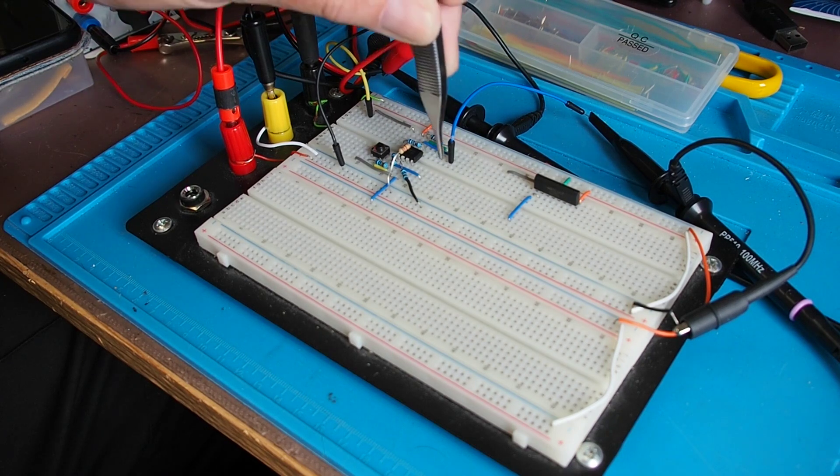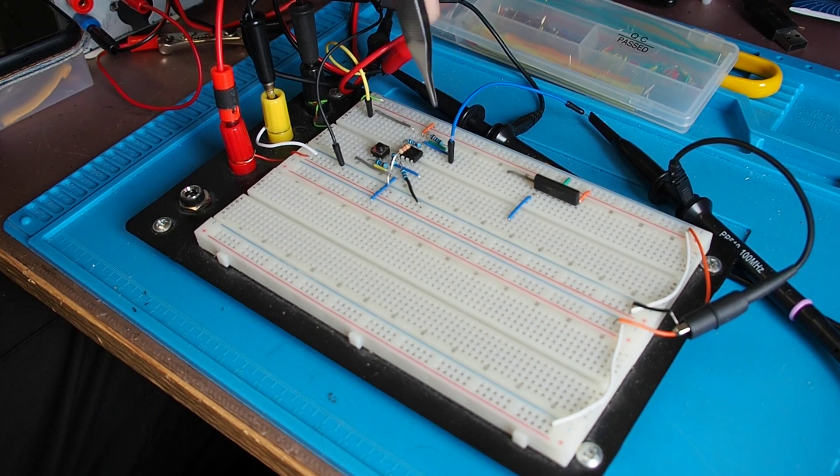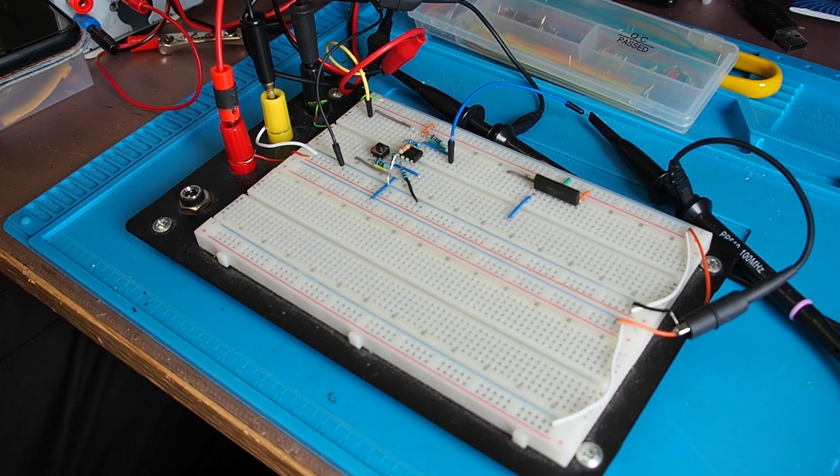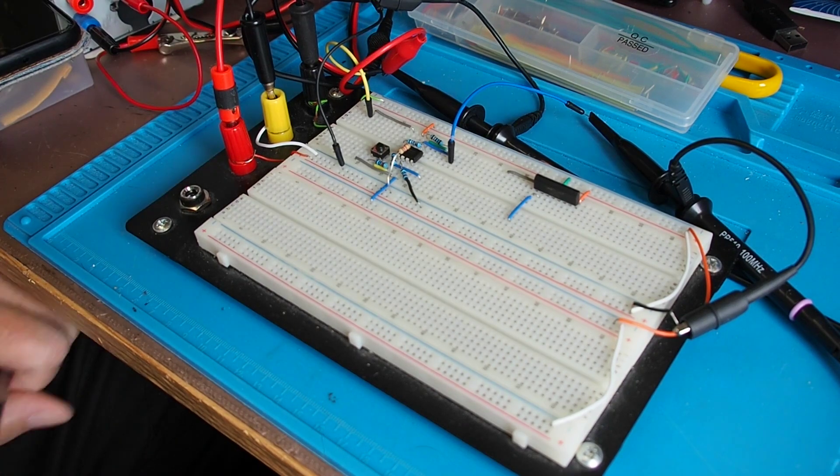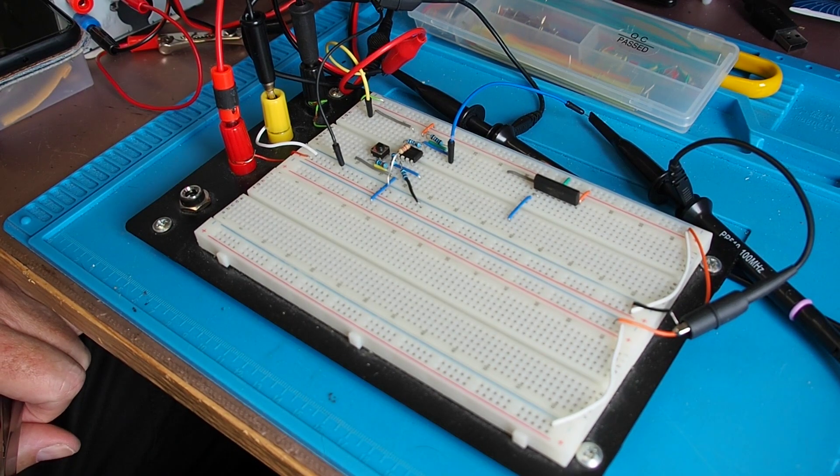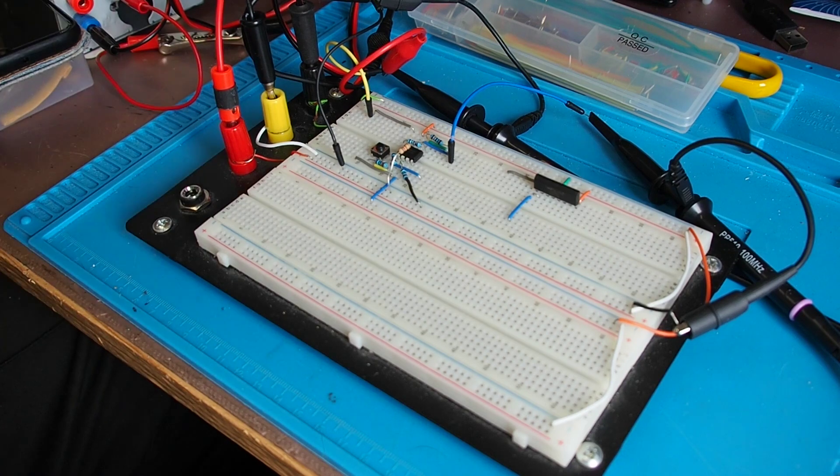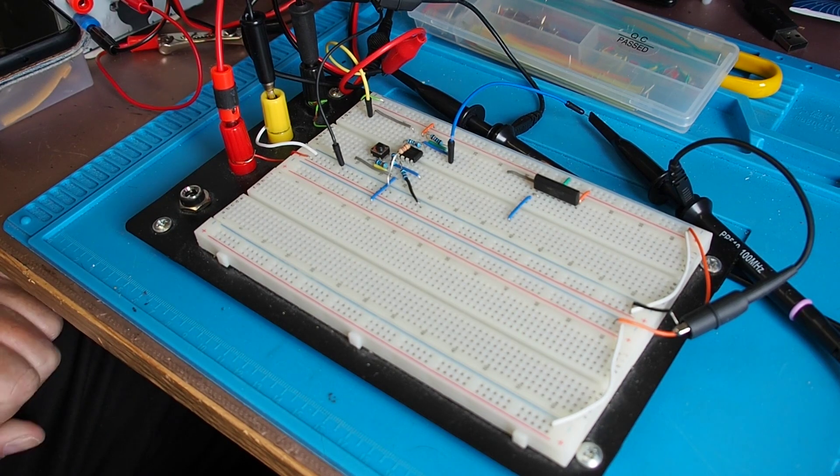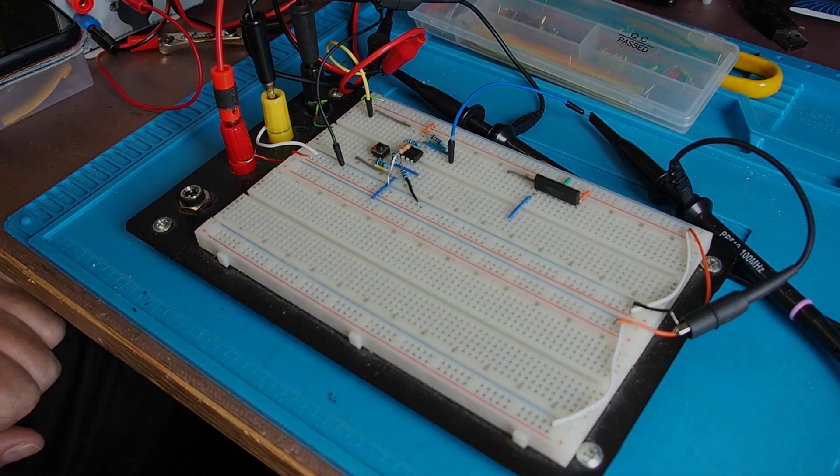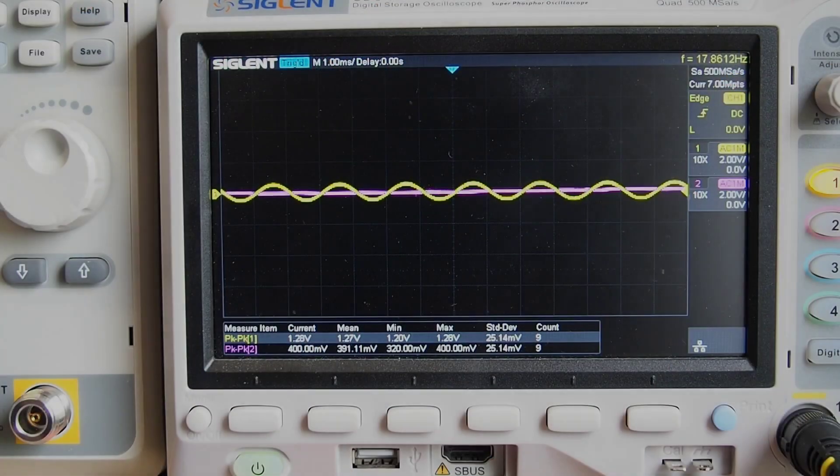Then the output goes out on that blue wire there. So exactly the same principle. I'm monitoring the input from the signal generator on channel one of the scope, and channel two of the scope will be showing you the output. So let's now go to the scope view and see what we've got.